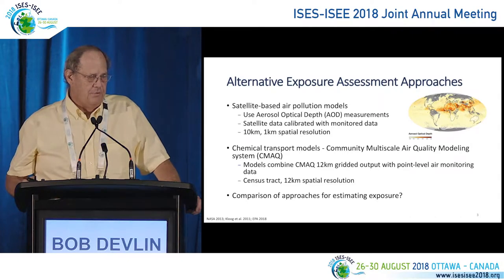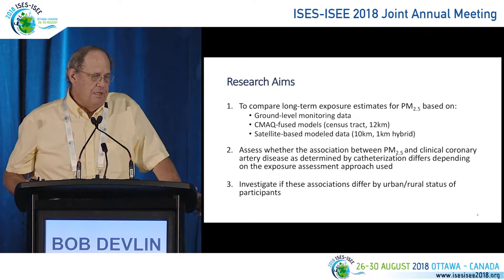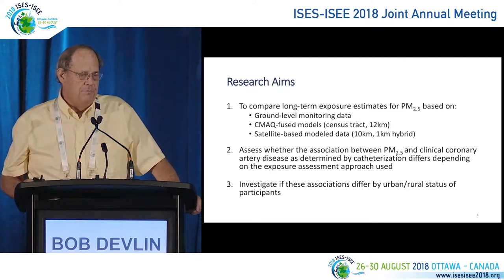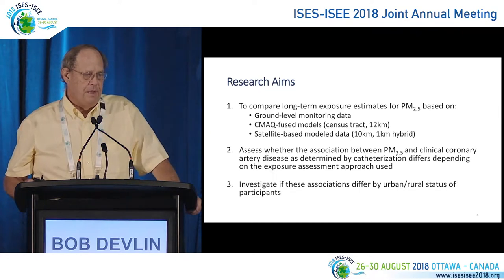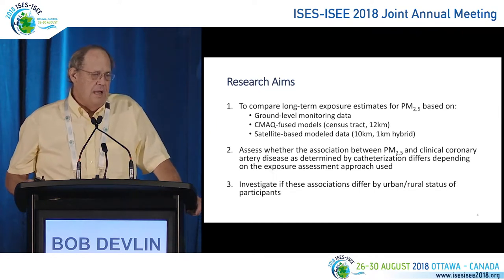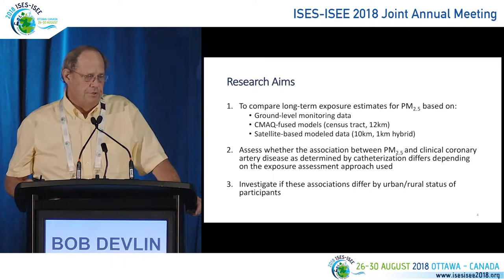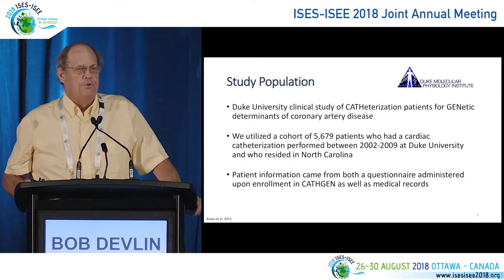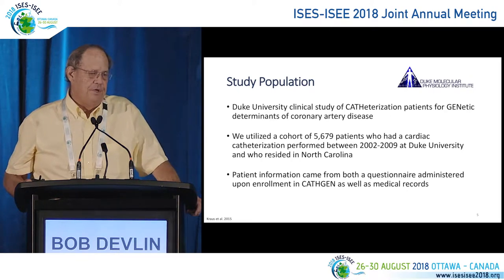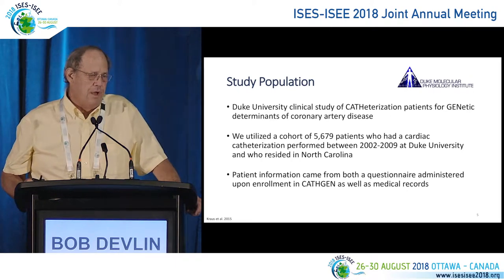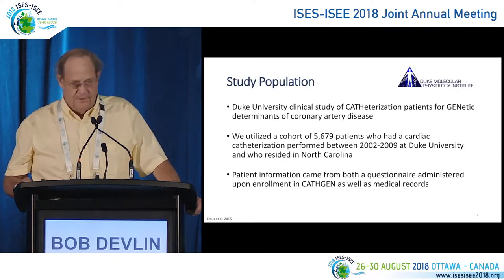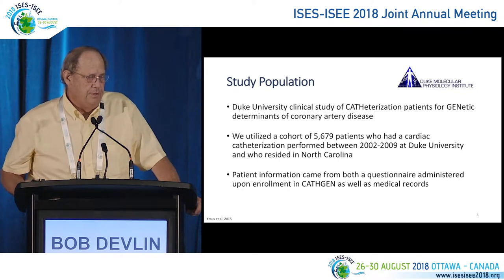All models are also compared to ground-based monitors. There are 41 monitors throughout the state of North Carolina, which is where the study takes place. The research aim is to compare these approaches and assess various health outcomes in a cohort of individuals. Another approach was to look at urban-rural effects, because one of the problems with ground monitors is difficulty assessing urban versus rural differences.